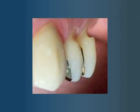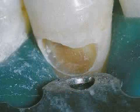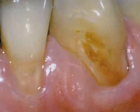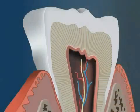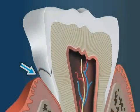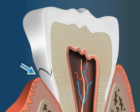Wedge-shaped defects describes defects in the hard dental substance at the border where the dental enamel meets the root cement. The enamel cement border of a tooth is the area where the dental enamel transitions into the root cement.